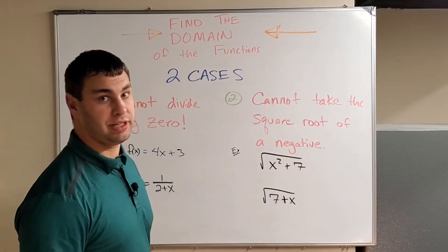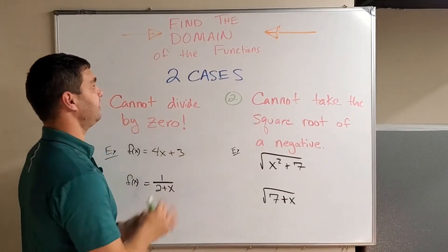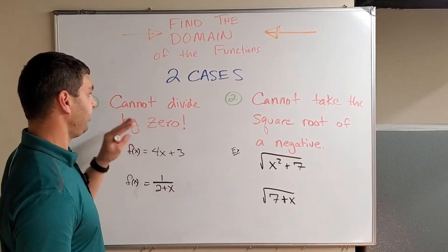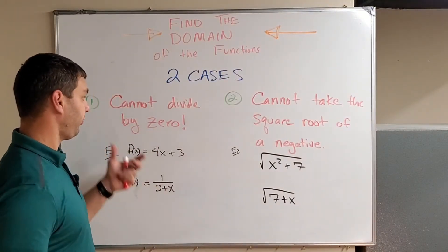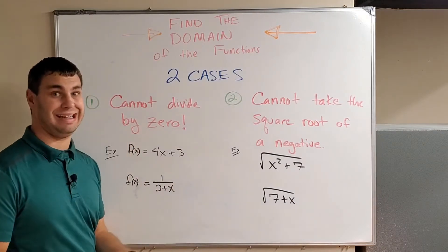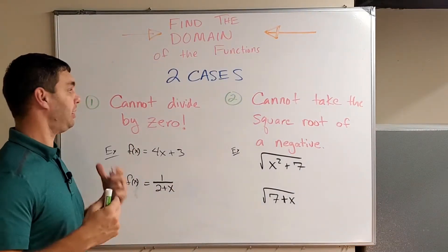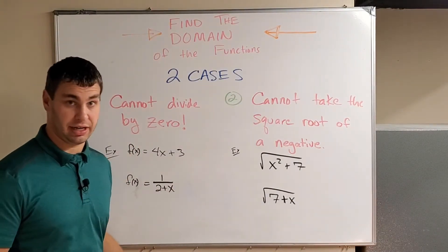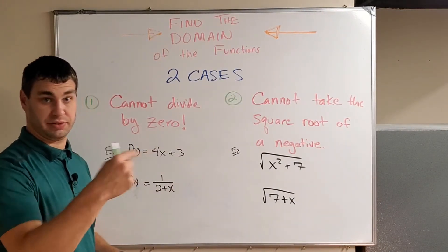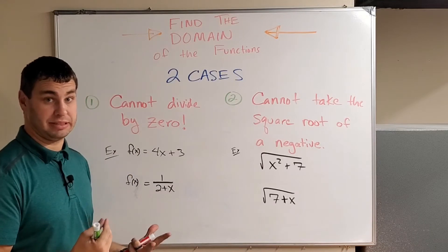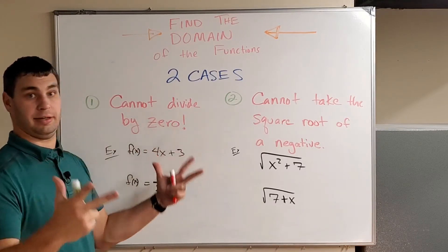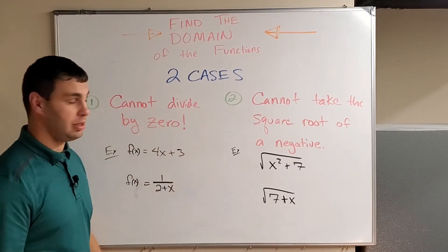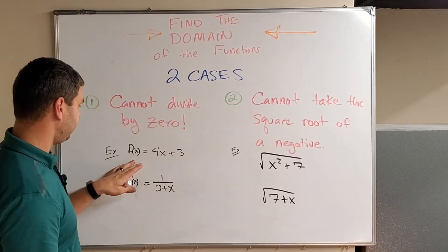Starting with our two cases, we have these two here. First off, we cannot divide by zero. You've done this in your calculator before where you've tried to divide by zero and it says error — it doesn't work. Same thing is true here.